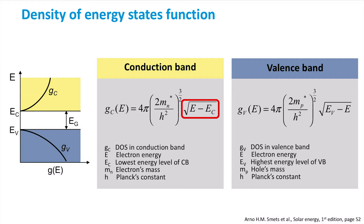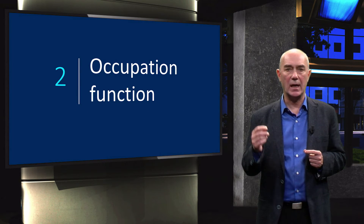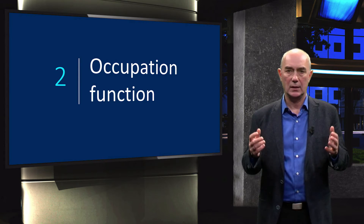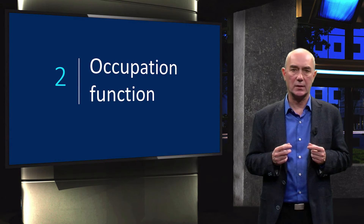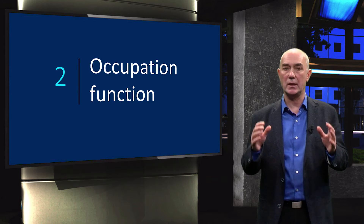Now let's continue with the valence band. The equations are very similar to that of JC, but now we have to use the effective mass of holes instead of electrons. So now we know the density of allowed energy states of mobile electrons and holes. In order to calculate the total charge carrier concentrations, we also need to know how many of these energy states are really occupied.